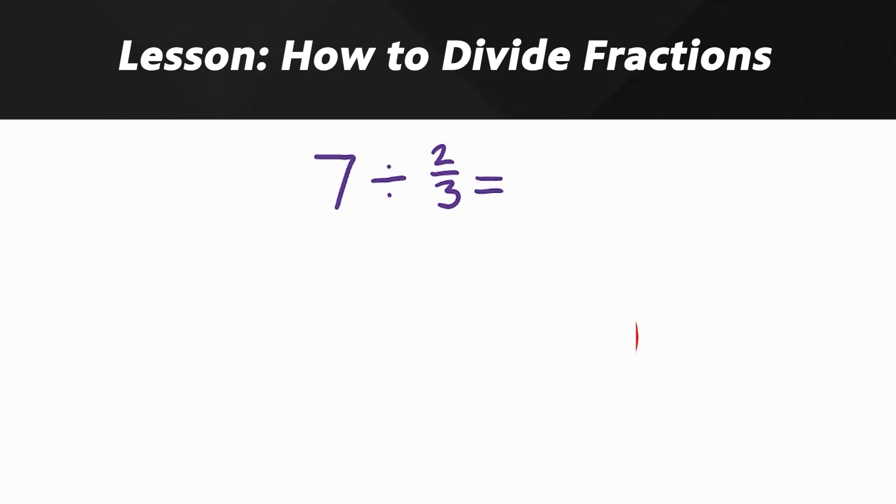Alright, last one. This time I'm going to put the whole number first: seven divided by two-thirds. So let's multiply by the reciprocal. Seven will become what? Seven over one. Now I'm not going to flip it around because I only do that to the second number. So seven over one times three over two. Now we check for cross simplifying. Can I do that here? Nah. That means it's time to multiply. Three times seven is 21 and one times two is two.